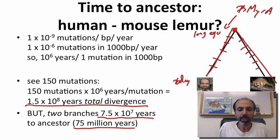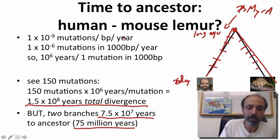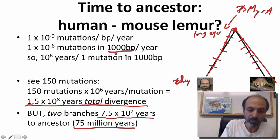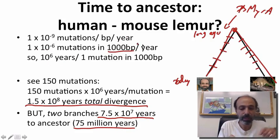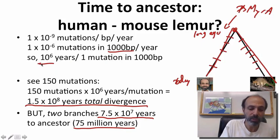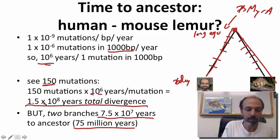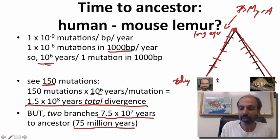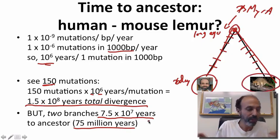Let's take a moment to review the method. We start with mutations per base pair per year. We look at how big a sequence we're examining — 1,000 base pairs. We flip the number so years is in the numerator: 10 to the 6th years per mutation. We have 150 mutations, multiply to get 1.5 times 10 to the 8th. We then divide by 2 because mutations are arising along both lineages — we're looking at base differences between humans and mouse lemur, not between humans and the ancestor. Therefore, we get 75 million years.